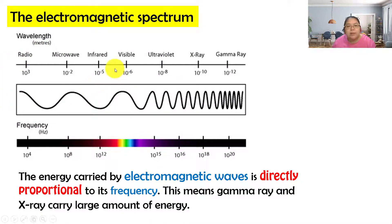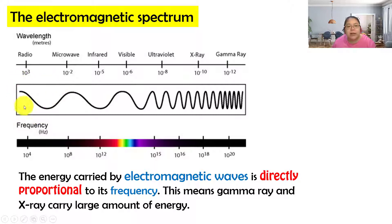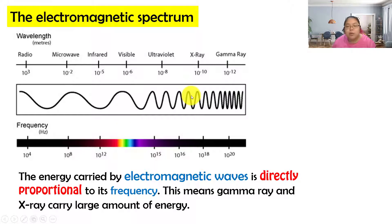This is the electromagnetic spectrum. Because they share the same characteristics, they are put inside one spectrum. This spectrum is arranged according to wavelength and also frequency. On the left side you can see the wavelength is bigger, and going to the right-hand side it becomes smaller. The amplitude is almost the same; it's the wavelength and frequency that change. Remember: v = fλ, so lambda and frequency are inversely proportional.